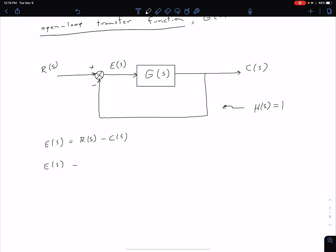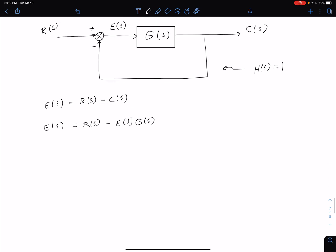Just like we did before, we can say our C of S is really just our error signal E of S times that open loop transfer function G of S. So what we can do now is we can solve for E.